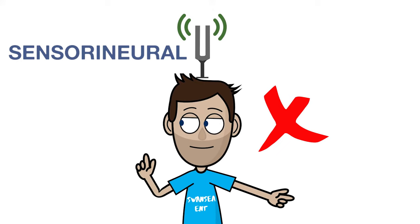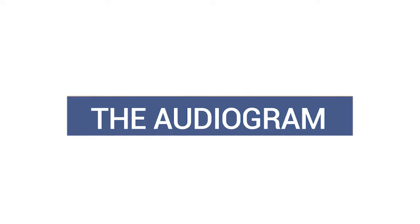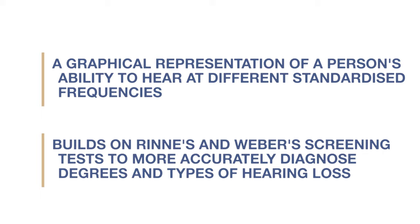This being said, the nature of hearing loss is more reliably measured using pure tone audiometry when it is available. An audiogram is a graphical representation of a person's ability to hear at different standardized frequencies.